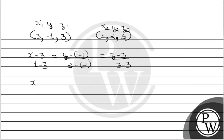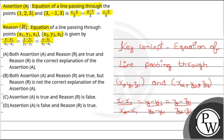Simplify करेंगे तो मिलेगा: x minus 3 divided by minus 2, which is equal to y plus 1 divided by 3, which is equal to z minus 3 divided by 0. तो यह है equation of line passing through (3, -1, 3) and (1, 2, 3). Option के साफ से देखें तो option number D correct होगा, क्योंकि हमारी equation अलग आई है जो assertion में दी हुई है, लेकिन reason सही है। I hope you understood it well. Thank you.